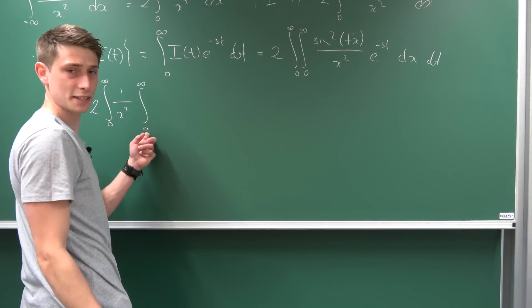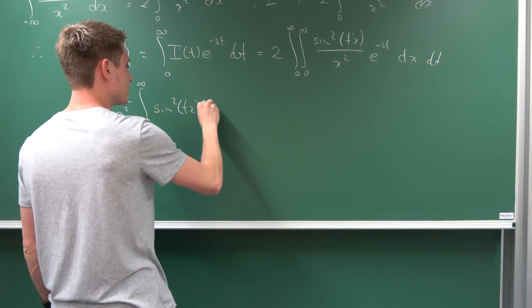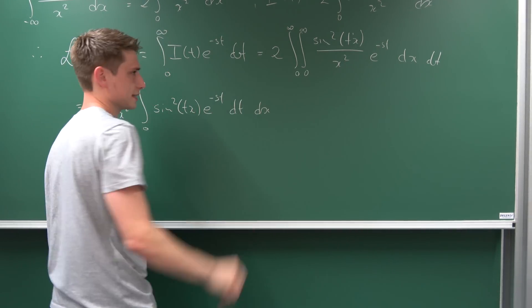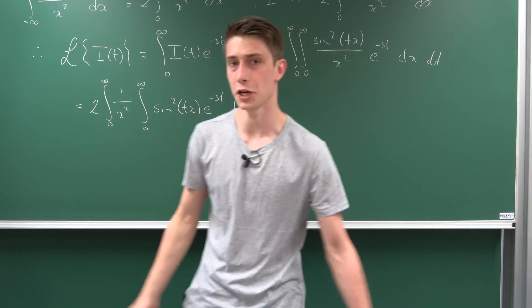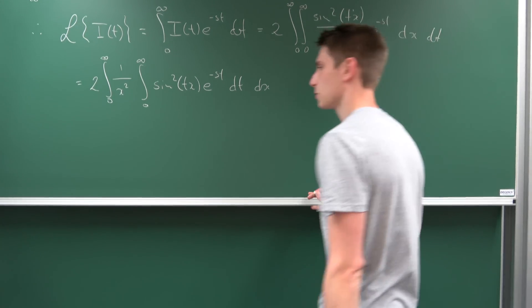So we have 1/x² and now we have the integral from 0 to infinity (in terms of t now, don't forget) of sin²(tx) times e^(-st) dt and then dx. We've changed the order of integration using Fubini. And you might notice something.